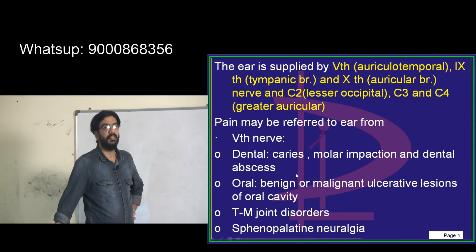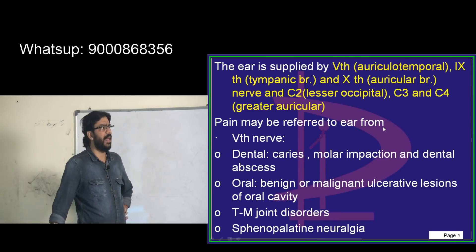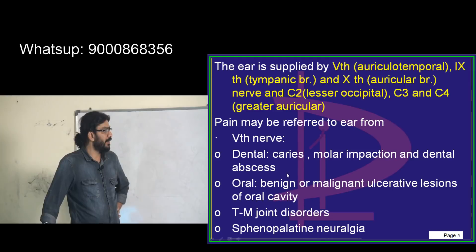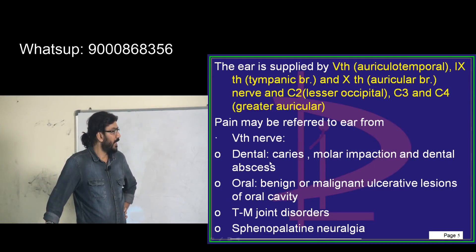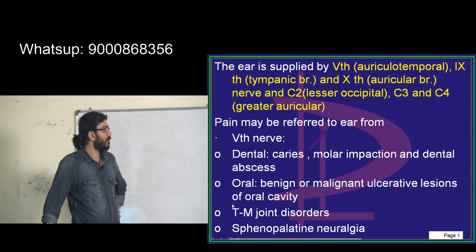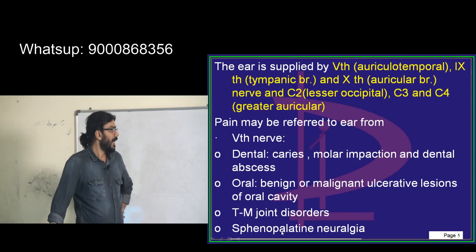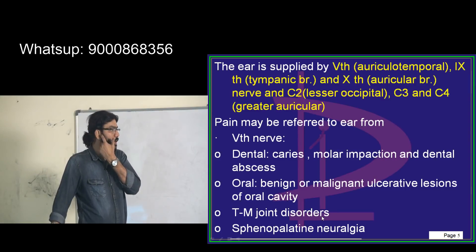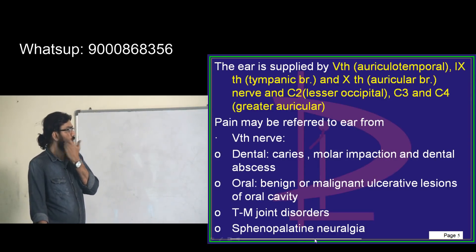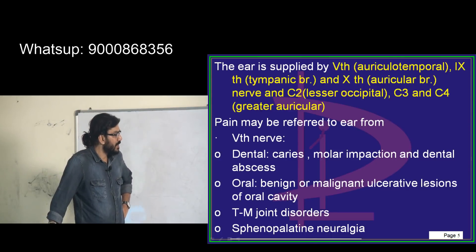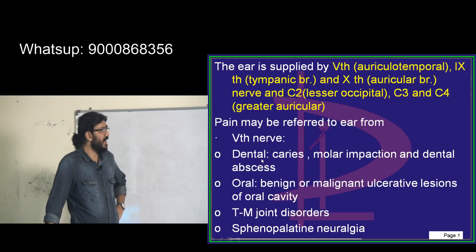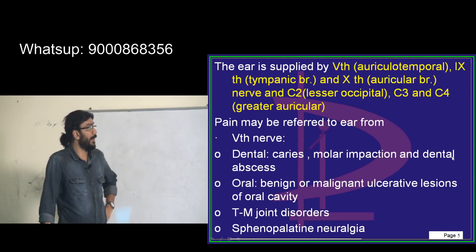Pain may be referred to the ear from the 5th cranial nerve. Sources include dental caries - T for teeth; T for tongue via the lingual nerve; T for TMJ; and sphenopalatine neuralgia. TMJ disorders, also called Costen syndrome, where opening and closing leads to pain in the canal and fullness in the canal. Oral benign or malignant ulcerative lesions, dental abscess, and molar impaction can all cause referred ear pain.